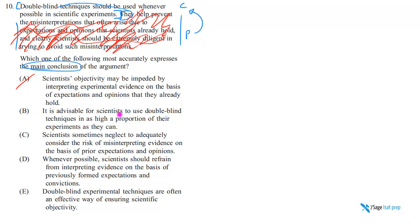B says, it is advisable for scientists to use double-blind study—advisable, should, very good—in as high a proportion of their experiments as they can, whenever possible, as high a proportion as possible. Yeah, perfect.